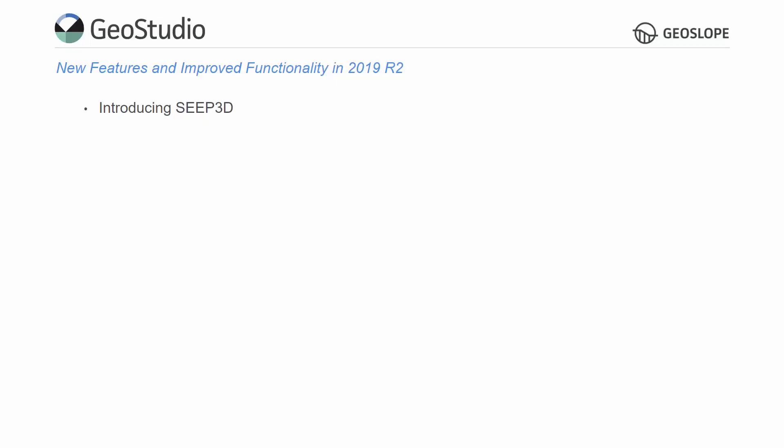3D seepage modeling is now available in GeoStudio. Though it has the same name as the 3D seepage model GeoSlope released in 2001, SEEP3D is a completely new product. Add SEEP3D to your existing SEEPW license to unlock the power of 3D groundwater flow analysis.